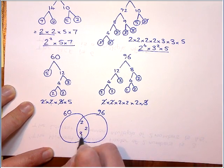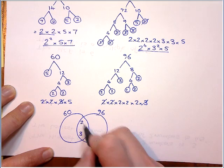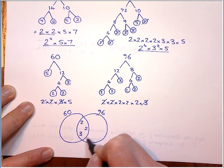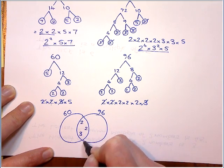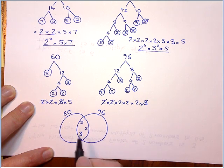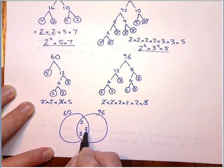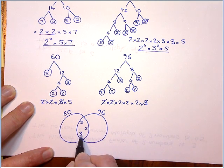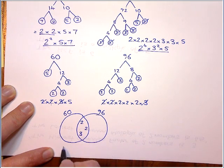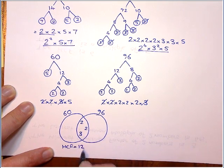So the highest common factor is this bit inside, common to both, multiplied together. So it's 2 times 2, which is 4, times 3, which is 12. So we say the highest common factor is 12.